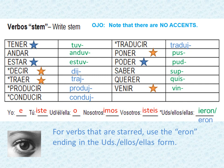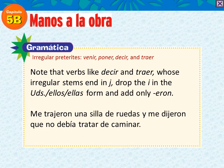In the green endings you'll notice I-E-R-O-N, and the blue words have just E-R-O-N. So for decir and traer, since they have J stems, you drop the I in the third person plural ending — for example, dijeron and trajeron. Here's an example sentence: Me trajeron una silla de ruedas y me dijeron que no debía tratar de caminar.